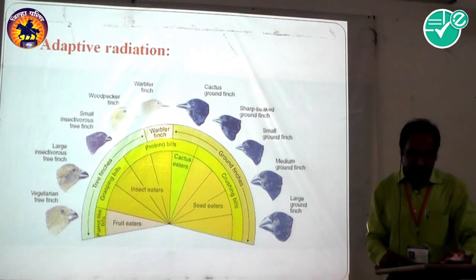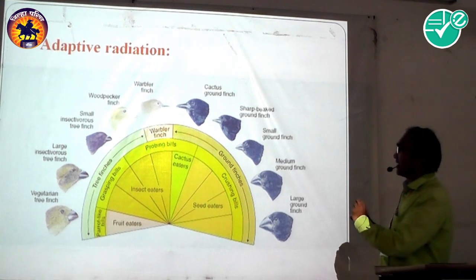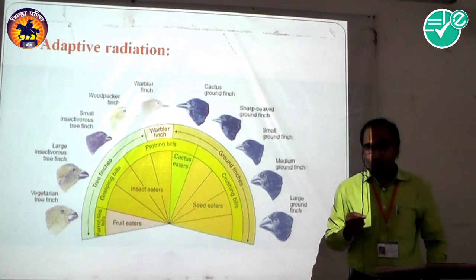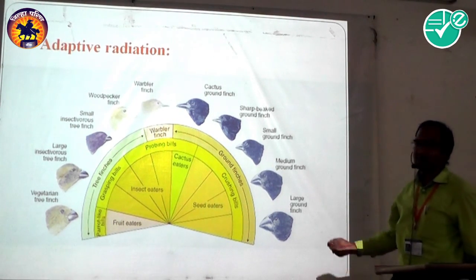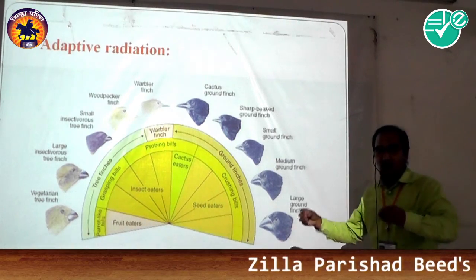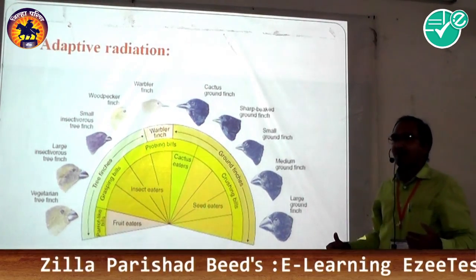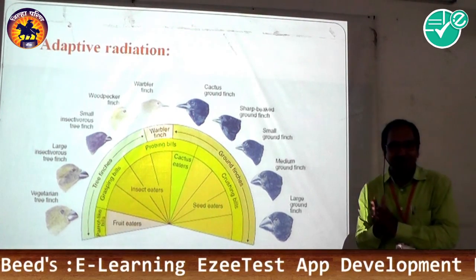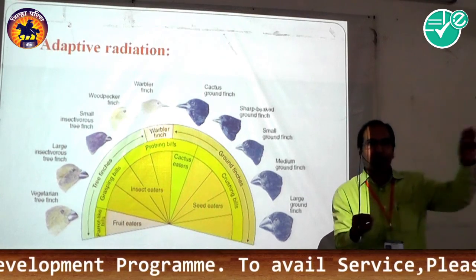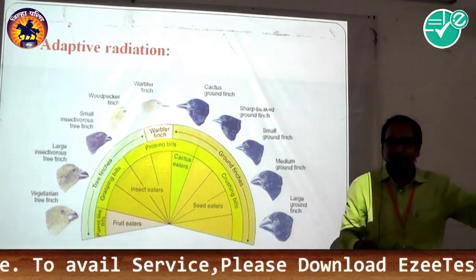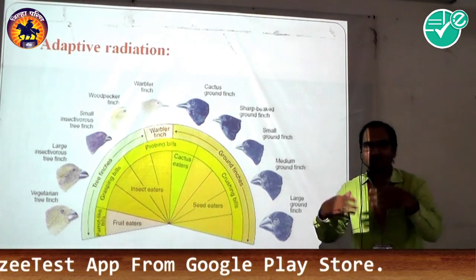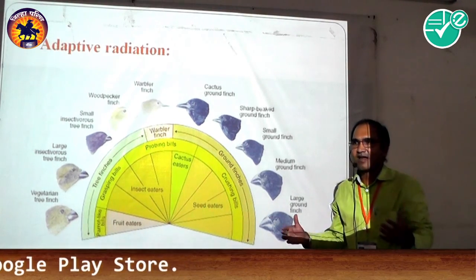The best example of allopatric speciation is Darwin's finches, caused by geographical isolation. When Darwin studied natural selection on the Galapagos Islands, he found different types of finches present on each island, different from each other and from the main island. When one group of finches migrated to another island, the environmental conditions there acted on the morphological and genetic characters of those organisms, causing them to change their morphological characters.